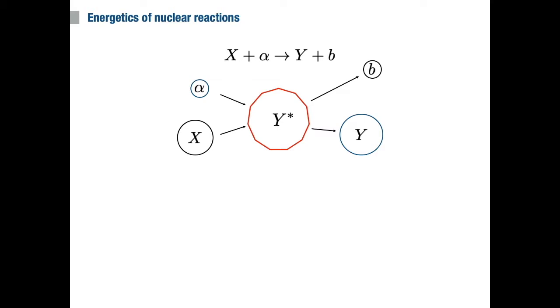In typical fusion reactions, this b can be a photon or a light particle, for instance, a proton, a neutron, or an alpha nucleus.